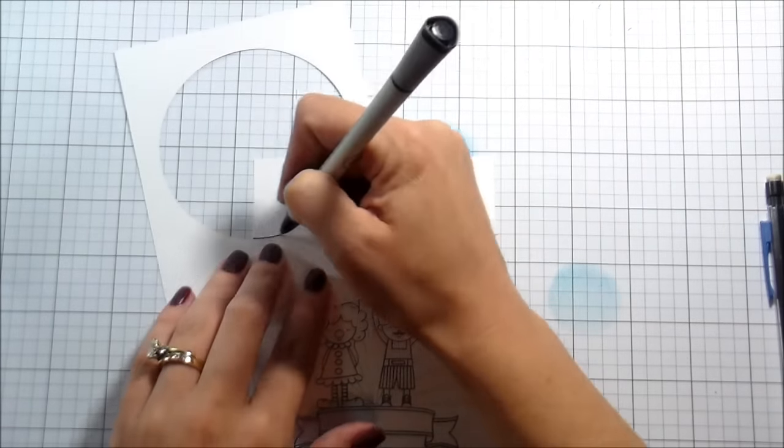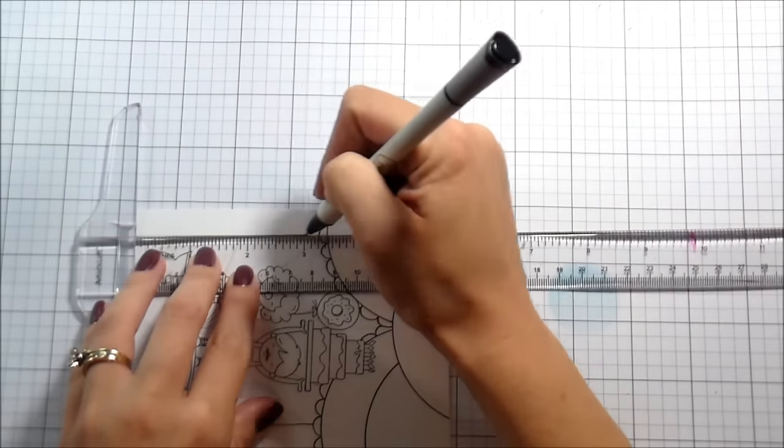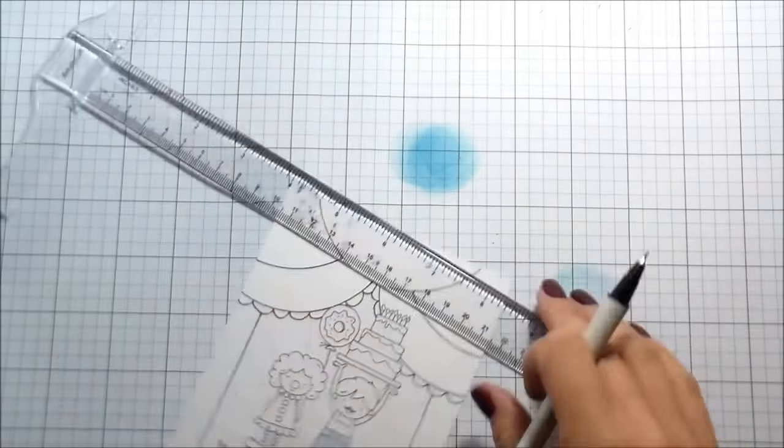So now that I have everything, including the other background, which I did kind of like a starburst, just rays, I did that all with pencil and either this circle or a T-square ruler. I'm going to now go back in.